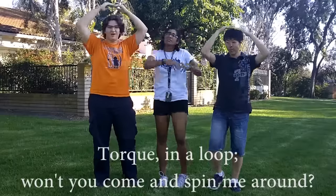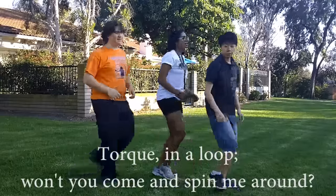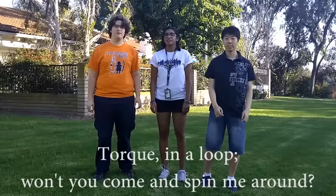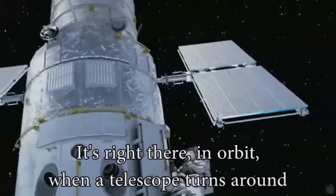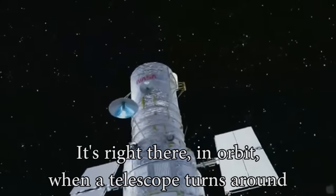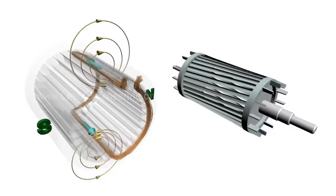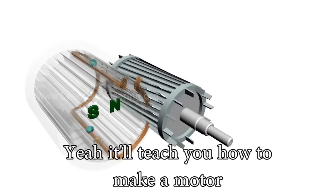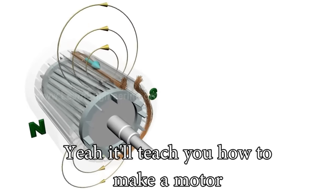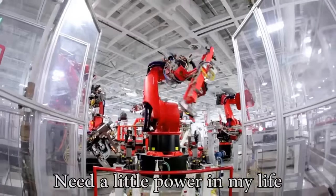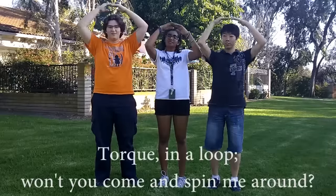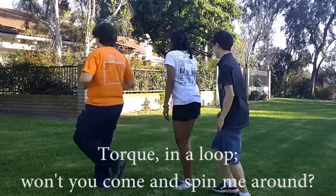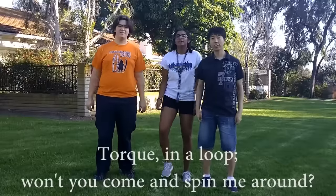That's my torque, in a loop, won't you come and spin me around? It's right there, in orbit, when a telescope turns around. Yeah, I'll teach you how to make a motor, need a little power in my life. Torque, in a loop, won't you come and spin me around.